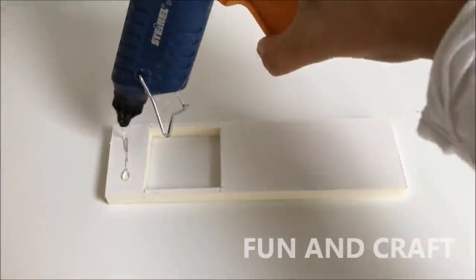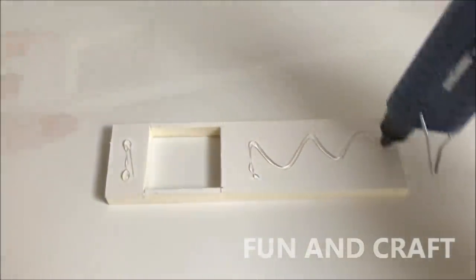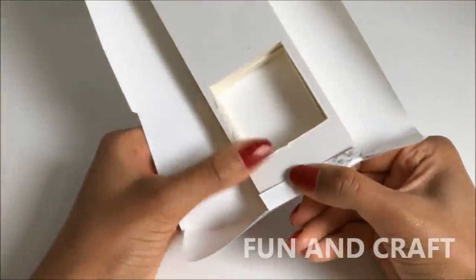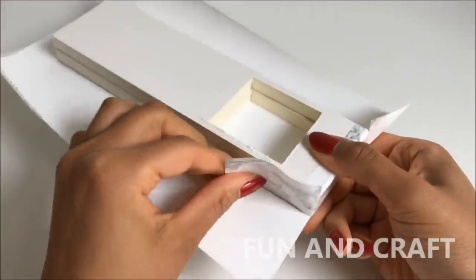Cut the same hole into the other piece of foam board and glue them together. Cover everything in marble contact paper and place the sink in the opening.